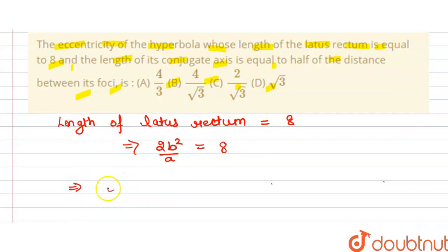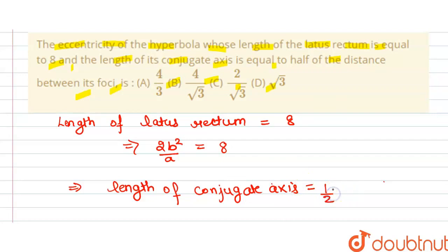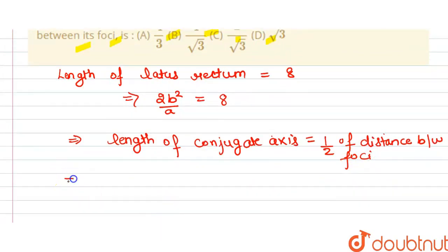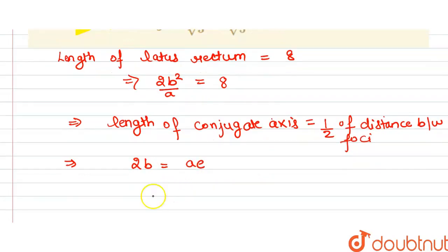We know that the length of the conjugate axis is equal to 2b, and the distance between foci is 2ae. Since the conjugate axis equals half the distance between foci, we get: 2b = ae.